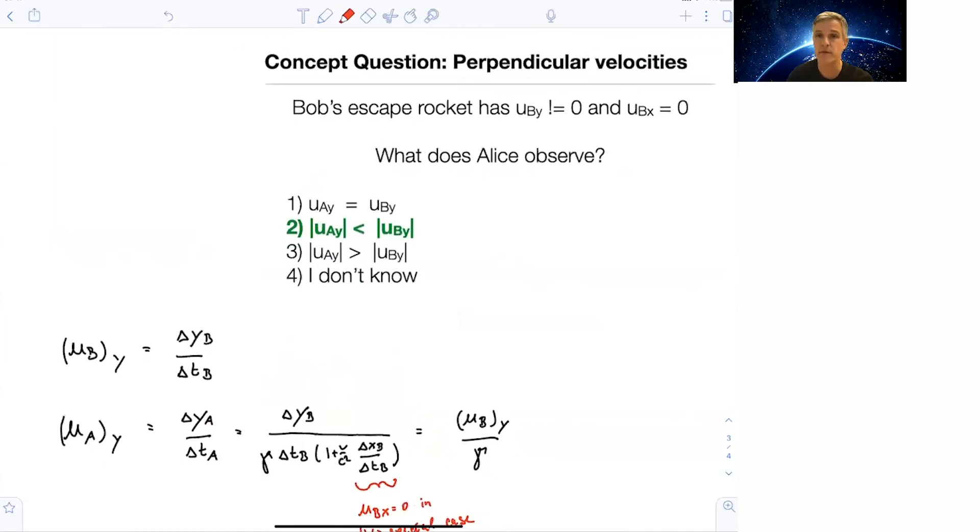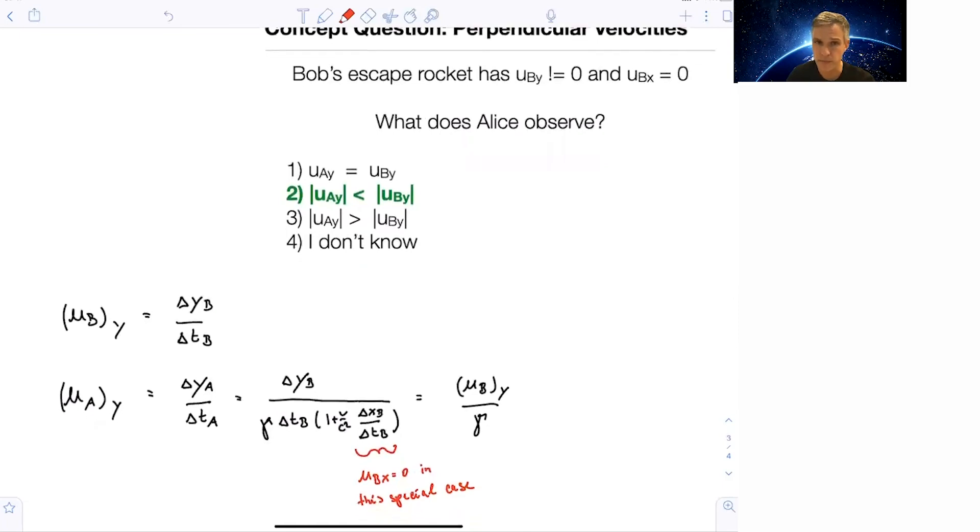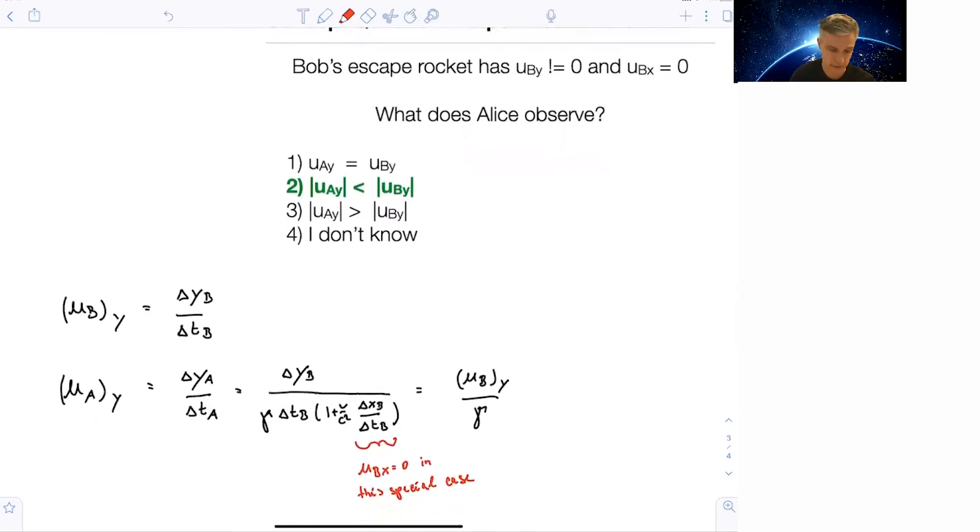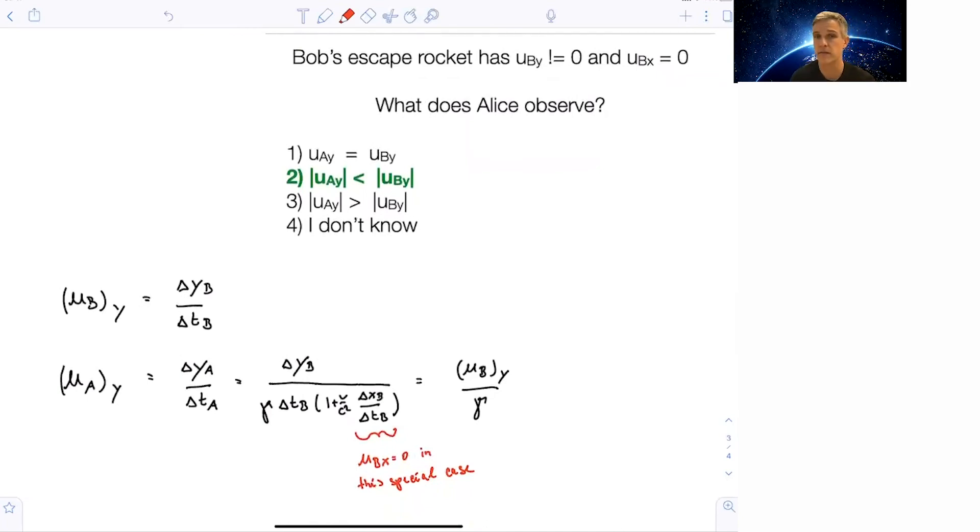The velocity as observed by Alice is actually, the absolute value is smaller than the one observed by Bob. We can do the very same calculation. We have uBy is delta yB over delta tB. And then for Alice, this is uAy, delta yA over delta tA. The y component, the length measured in y direction between Bob and Alice is invariant, as we saw in the previous section. But the time is not. We do have to do the Lorentz transformation of delta tA and find that in the case where ubx is equal to 0, we just have to divide uBy over gamma.